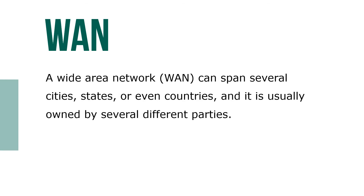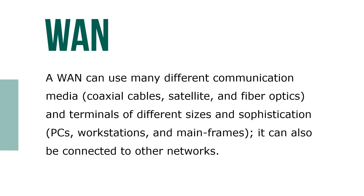A wide area network (WAN) can span several cities, states, or even countries, and is usually owned by several different parties. A WAN may use many different communication media like coaxial cable, satellite, and fiber optics, and terminals of different sizes and sophistication — PCs, workstations, and mainframes. It also can be connected to other networks.